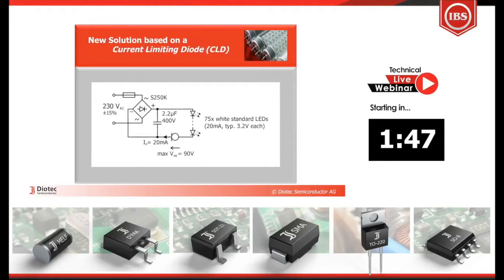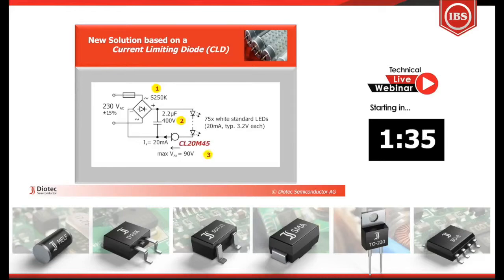Current limiting diodes, or CLDs for short, offer a solution which drastically reduces device count. You just need a bridge rectifier, a small film capacitor, and the CLD CL20M45. There is no flicker on the emitted light, even if the mains fluctuate, since the CLD keeps the driving current absolutely constant.